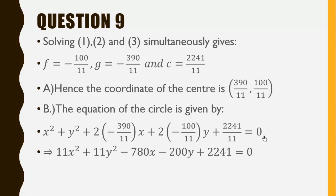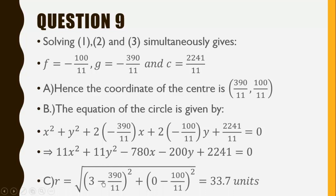Now we are also asked to find the radius of the circle. We know the center of the circle and we know points on the circle, so we find the distance between the center and any point on the circle. The radius equals the distance between point (3, 0) and the center (390/11, 100/11). That gives us the square root of (3 minus 390/11) squared plus (0 minus 100/11) squared, and simplifying this gives us 33.7 units.